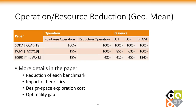This slide summarizes the operation and resource reduction of DCMI and HSBR compared with SODA. We can see that HSBR reduces both point-wise and reduction operations, which eventually leads to 59% LUT usage reduction and 55% DSP usage reduction, with only 24% more BRAM usage.